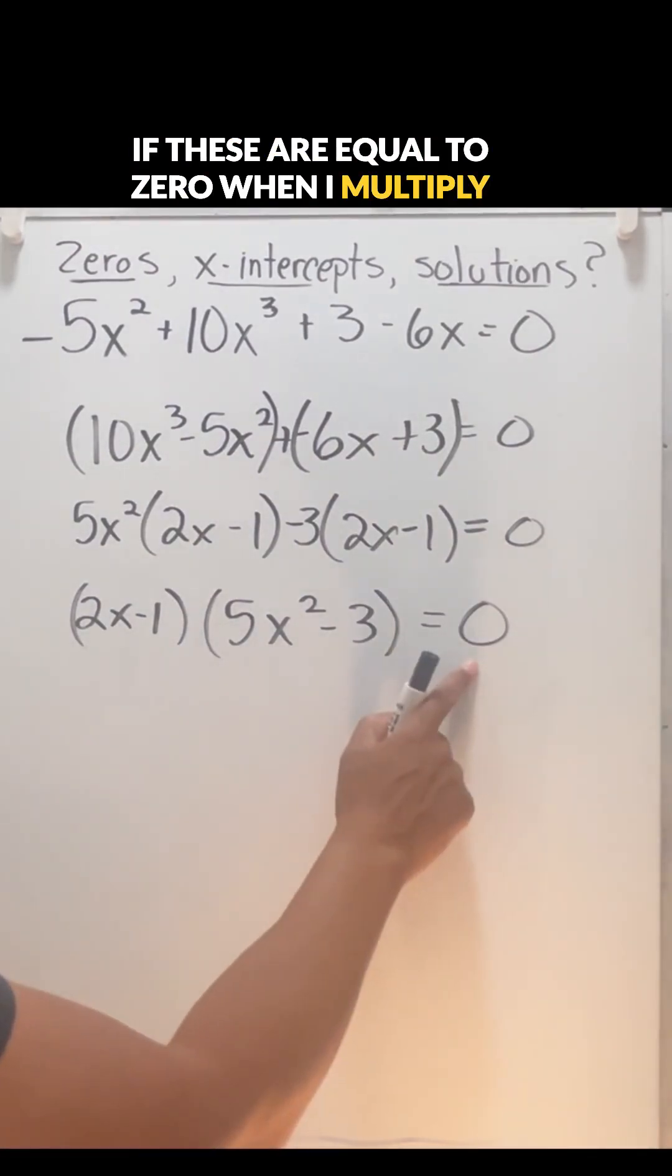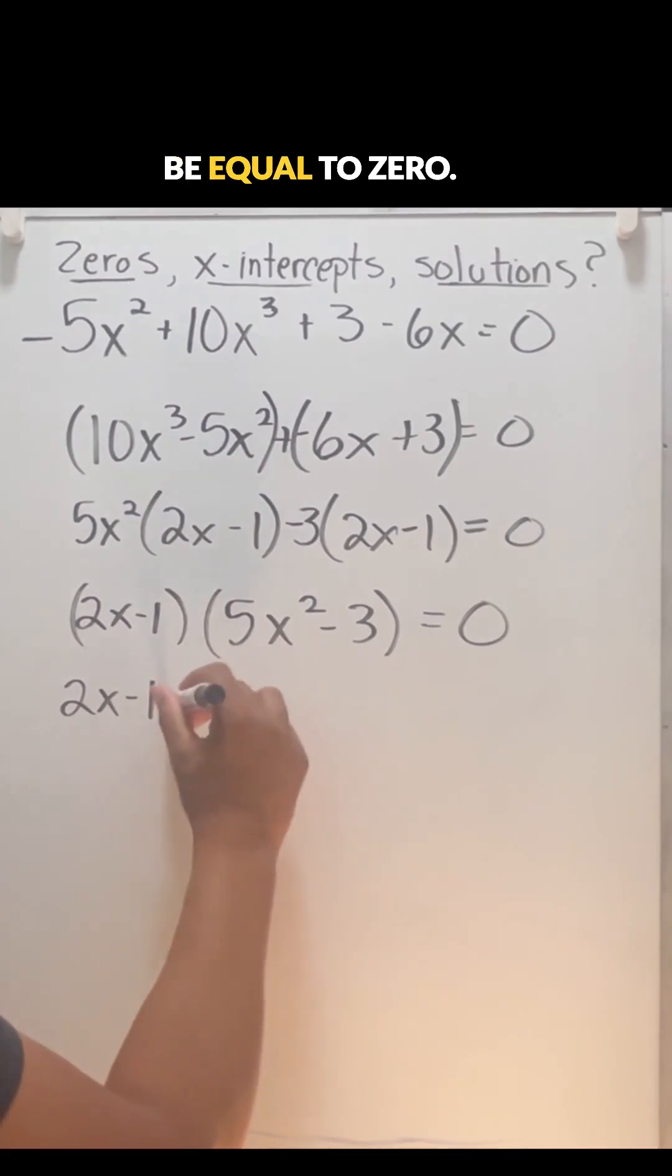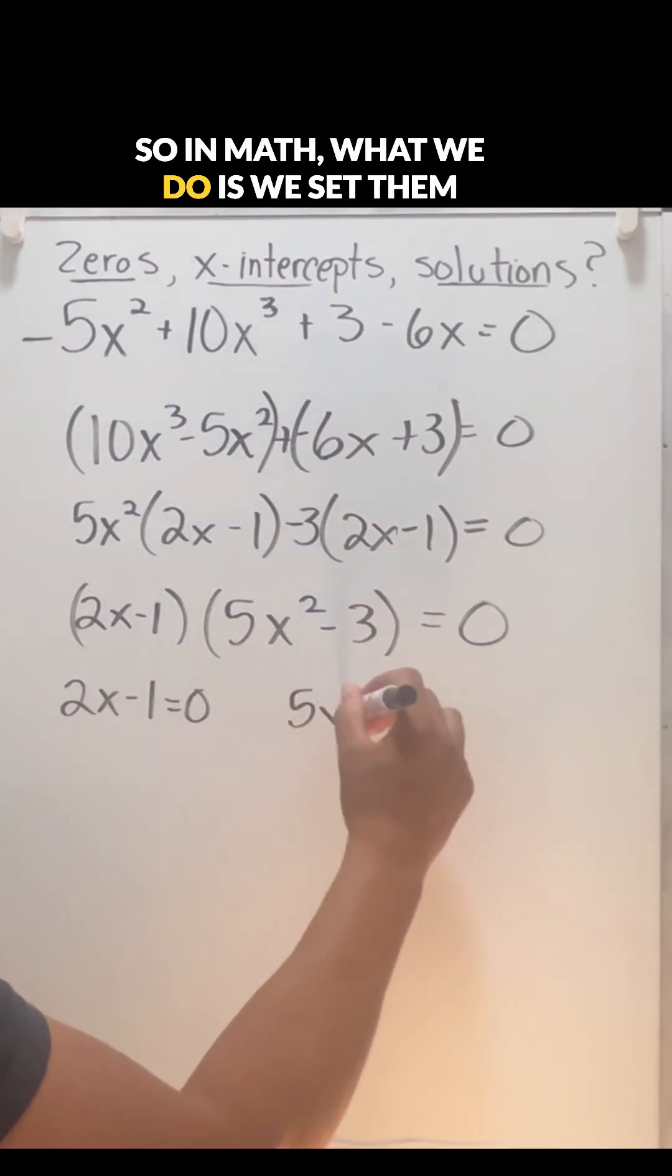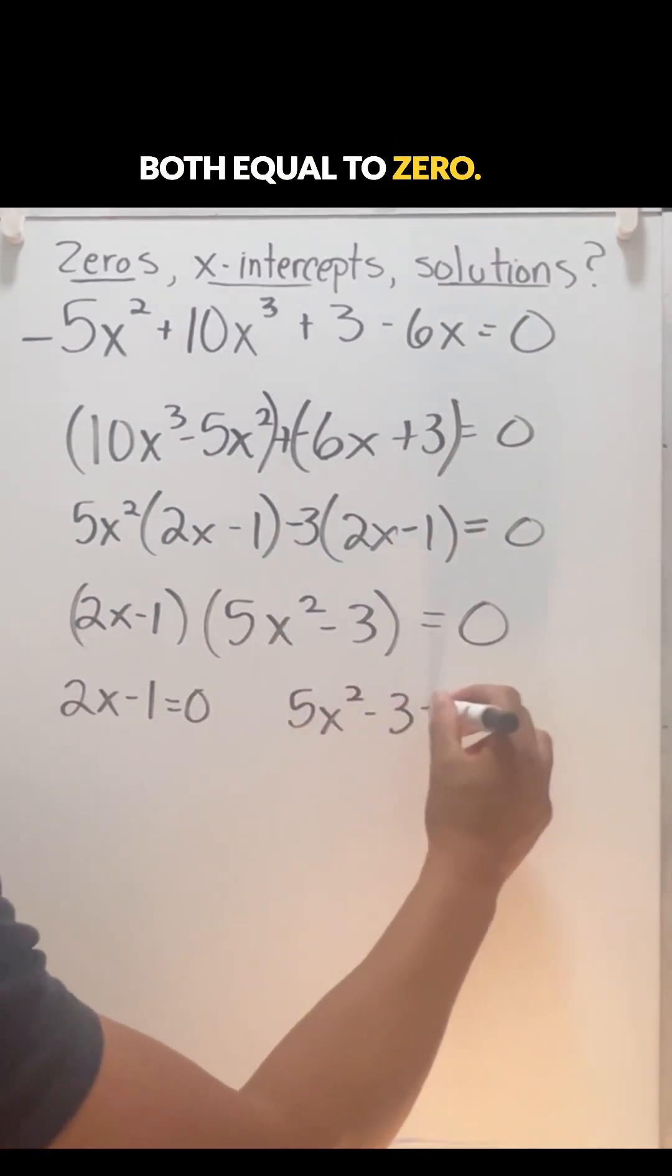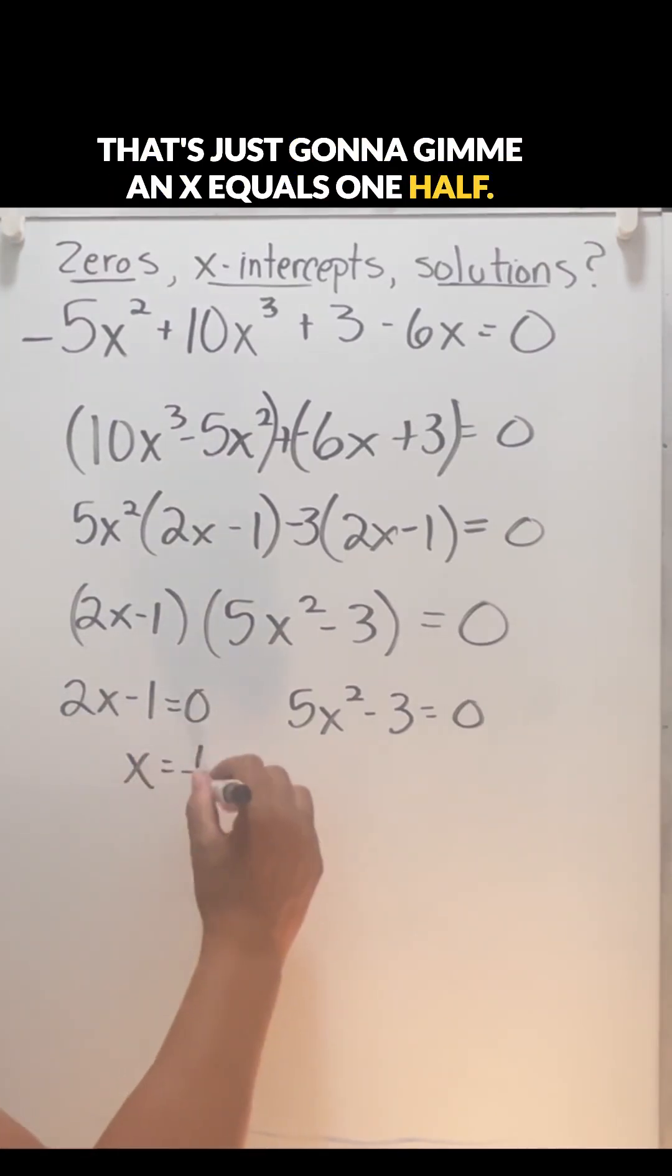If these are equal to zero when I multiply them, that means one of these must be equal to zero. So in math, what we do is set them both equal to zero, and then we'll solve. Here, I'm going to add the one and divide the two. That's just going to give me x equals one half.